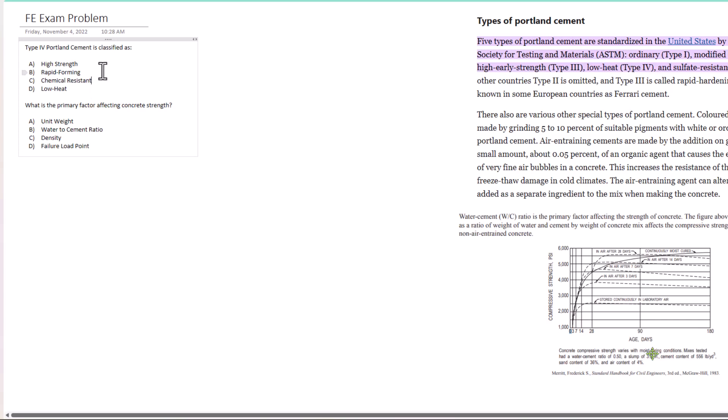Now we're narrowed down to about three options. Type 4 is generally not one of the more rapid forming ones, so you can narrow it down to a couple answers and take an educated guess. We know it's low heat. I have an excerpt here from ASTM.